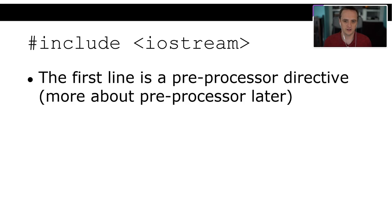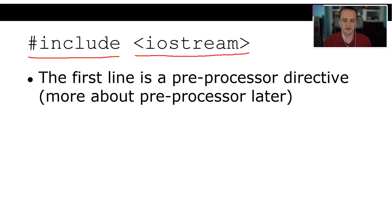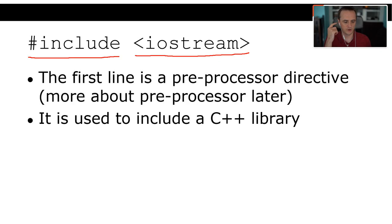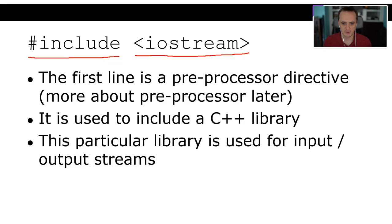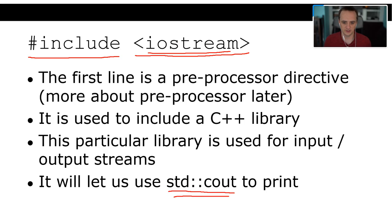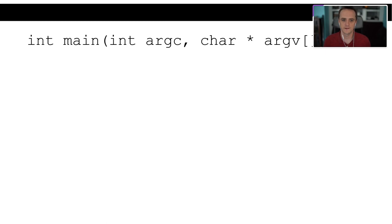The iostream library, or input-output stream, is used for input and output. If we want to output to the console in C++, we use iostream, which lets us use std::cout to print things. The next line is 'int main' — a function declaration with arguments. The function is called main, it returns an int, and every C++ program must have a main function defined. The contents are enclosed in curly brackets, just like in Java.